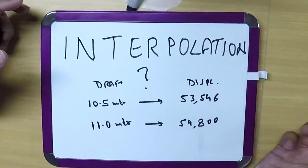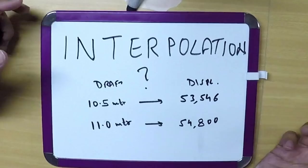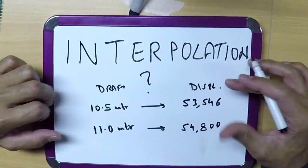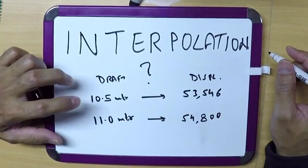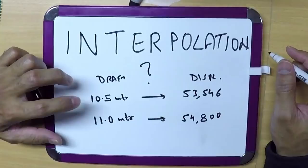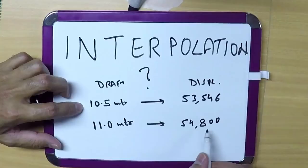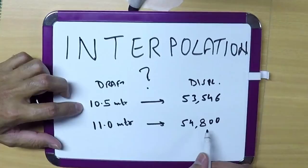Interpolation. Let me first tell you what it means. In your stability problems in second mates or mates, you will be given a table for draft along with displacement. Draft will not be given for each and every centimeter. For example, the draft is 10.5 meters for which corresponding displacement of ship is 53,546, and for 11 meters, 54,800. Now the question is you need draft for 10.756 meters, so how much?